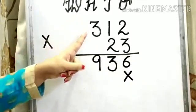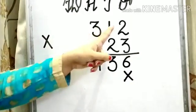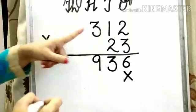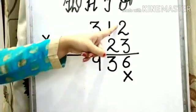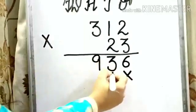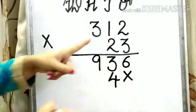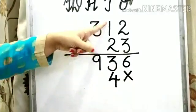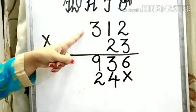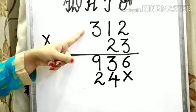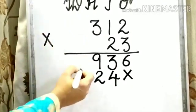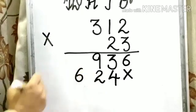Step 2: we have to multiply 312 by 2. So 2 times 2 is 4, write down 4. 2 times 1 is 2, write down 2. 2 times 3 is 6, so write down 6 over here.